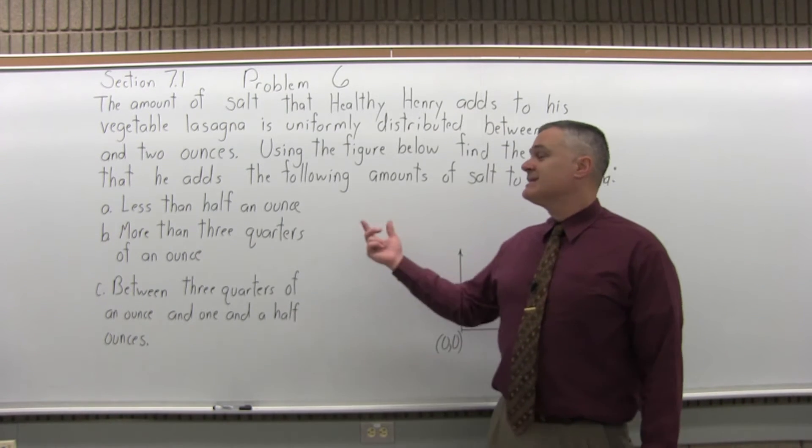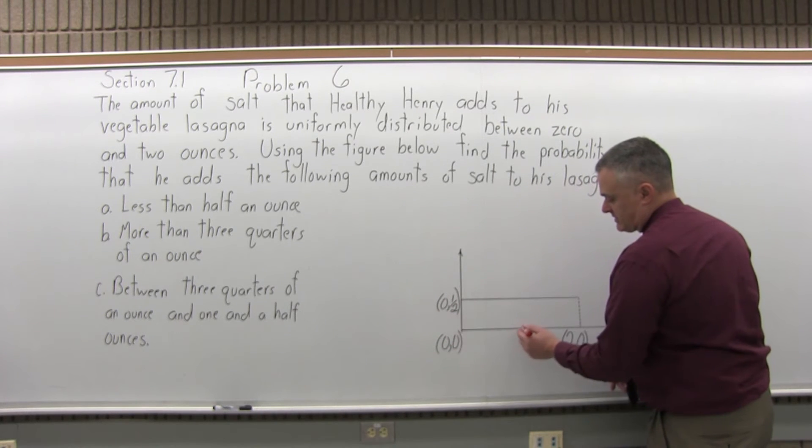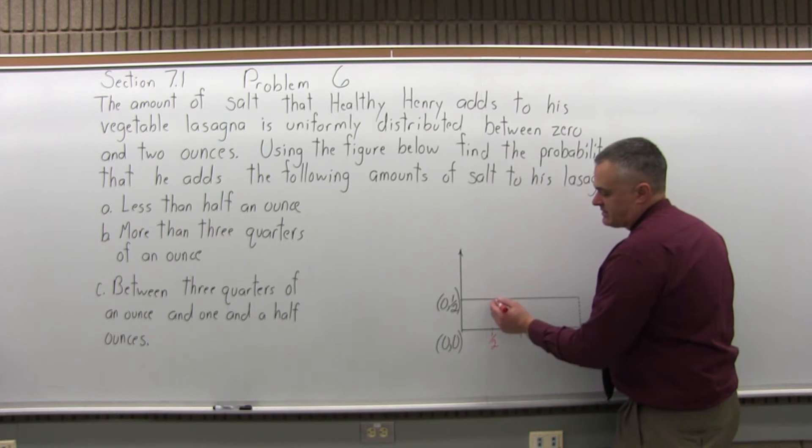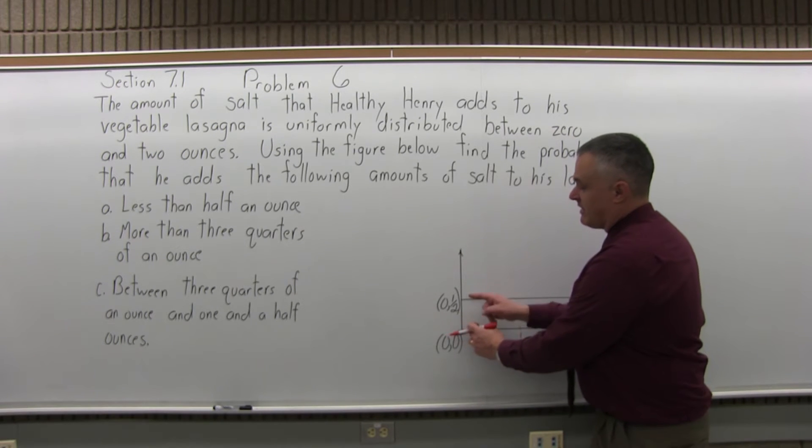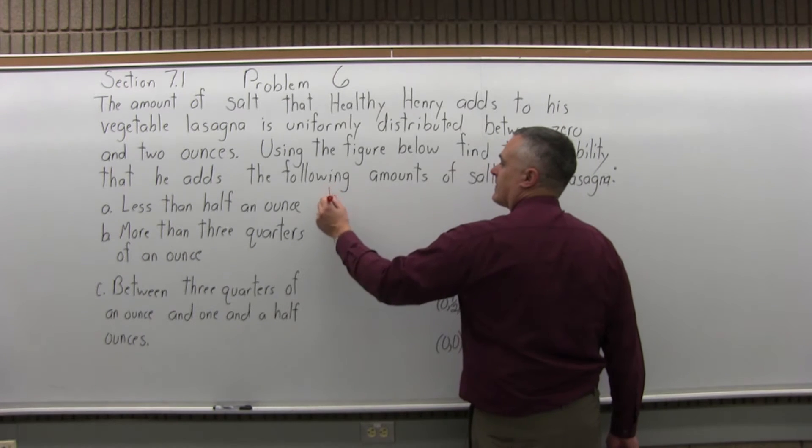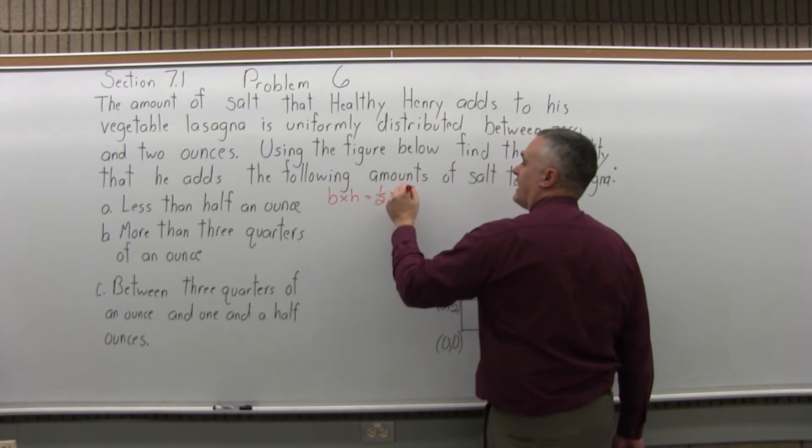So for less than half an ounce, well, it goes from 0 ounces to 2 ounces. So right in between we'll have 1 ounce and then this would be half an ounce. So what we have is a block with a base of 1 half and a height of 1 half. So for A, base times height is 1 half times 1 half.